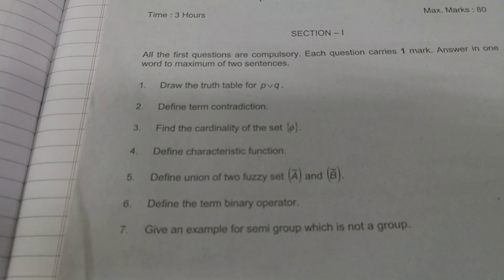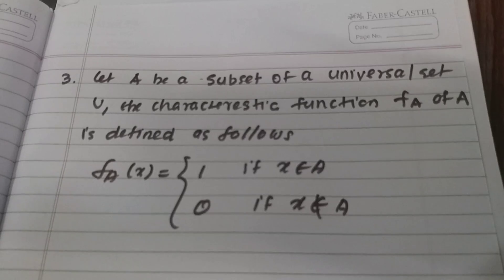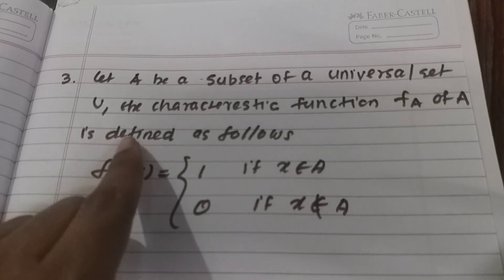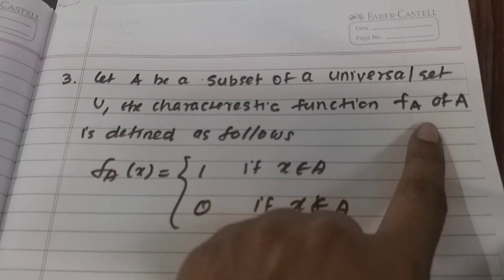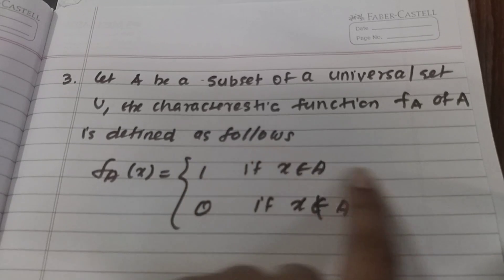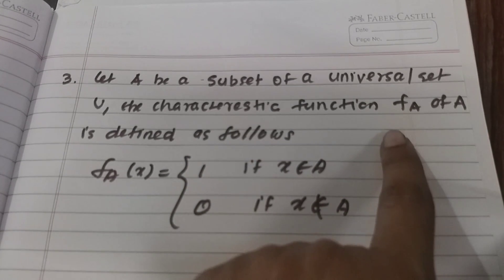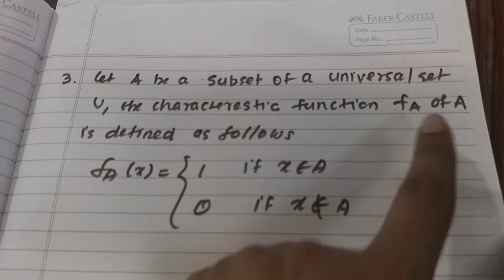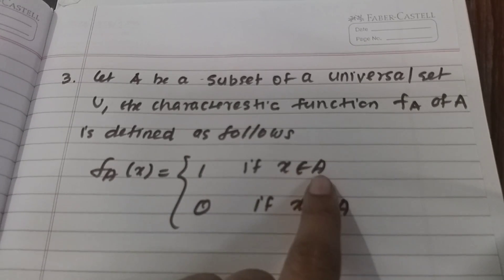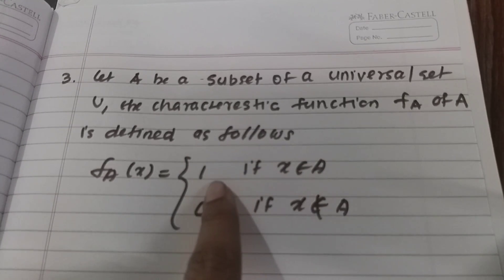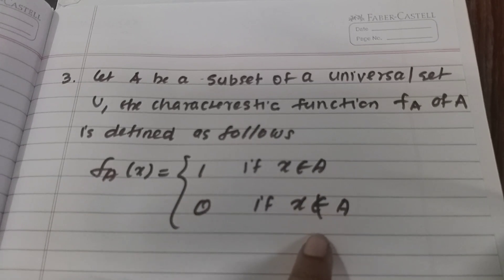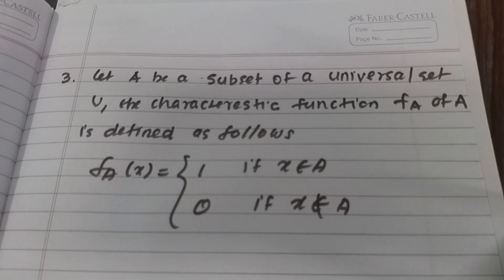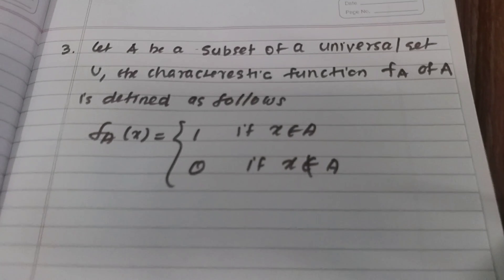Question 4: Define the Characteristic Function. Let A be a subset of a universal set U. The Characteristic Function F of A is defined as follows: if an element belongs to A, the value is 1; if the element does not belong to A, the value is 0.